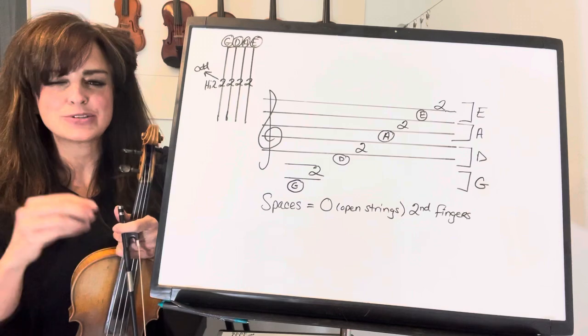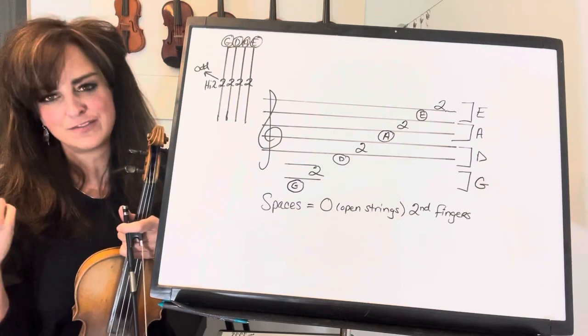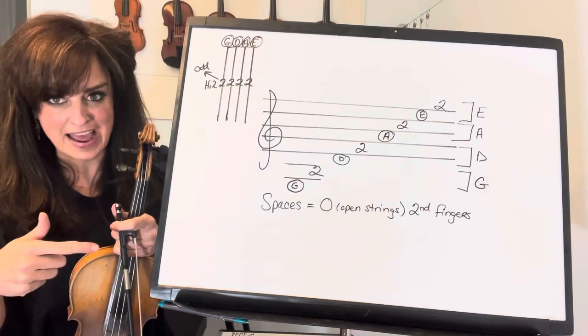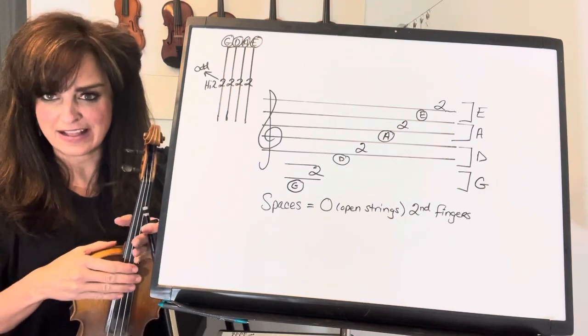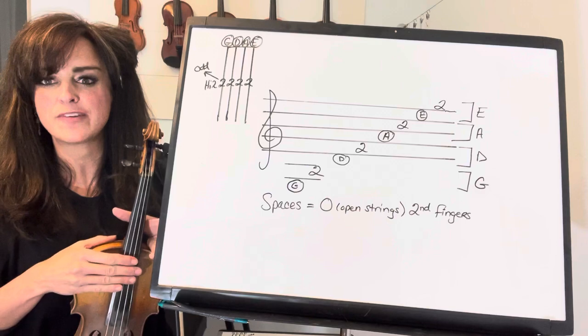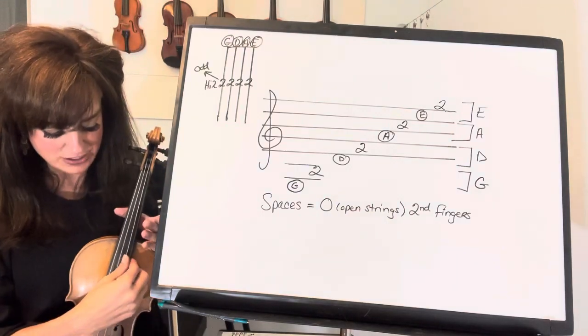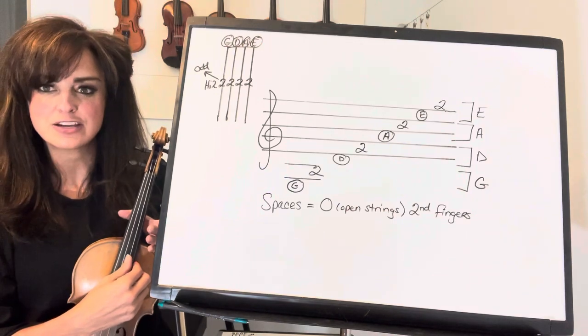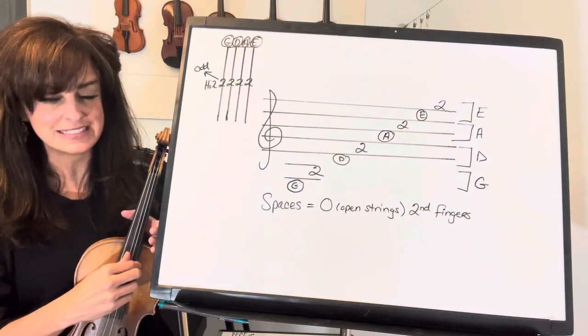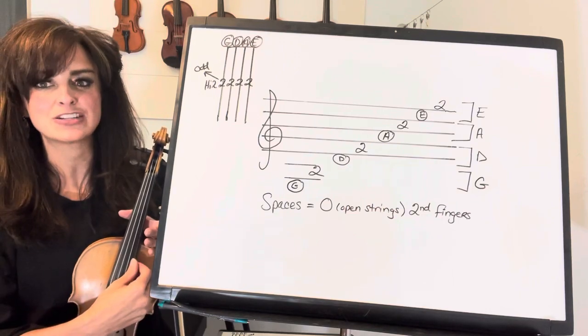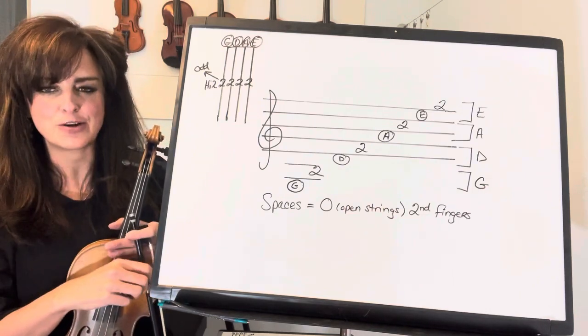This relates back to another video I did about figuring out the 1, 4, and 5s on the violin. Since our violin's based on perfect fifths, you can go to the A string as your 1, then down a fifth to D which would be your 4, and up a fifth from A that's your 5 chord. You can look at that video.